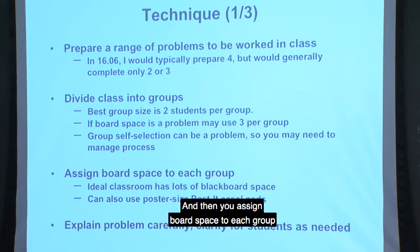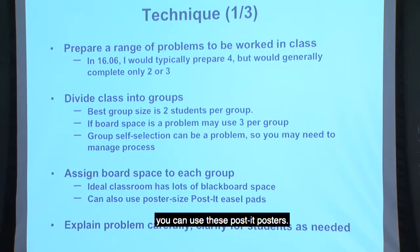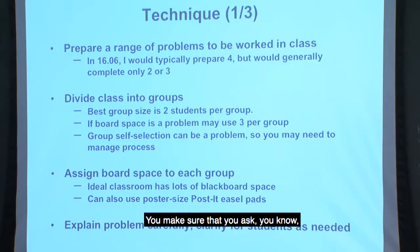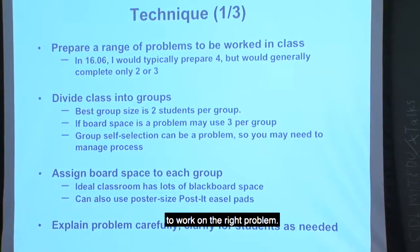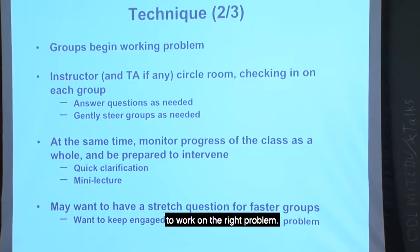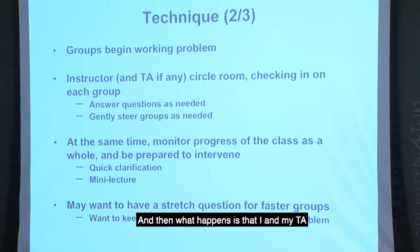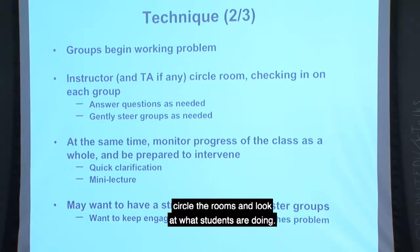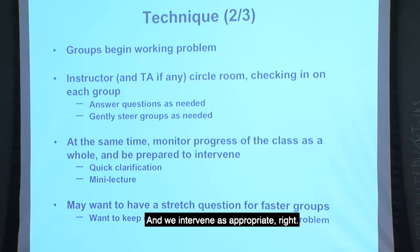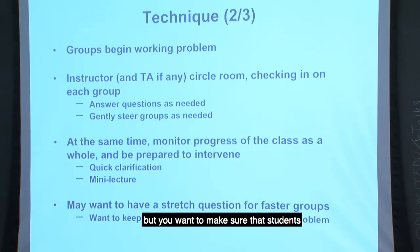You assign board space to each group, and if there's not enough blackboard space you can use big post-it posters — that works just as well. You explain the problem carefully and ask if everyone understands, because you want everyone working on the right problem. Then the groups begin working, and my TA and I circle the room and look at what students are doing, intervening as appropriate. That's the tricky part — you don't want to intervene too early, but you also don't want students to waste a lot of time.